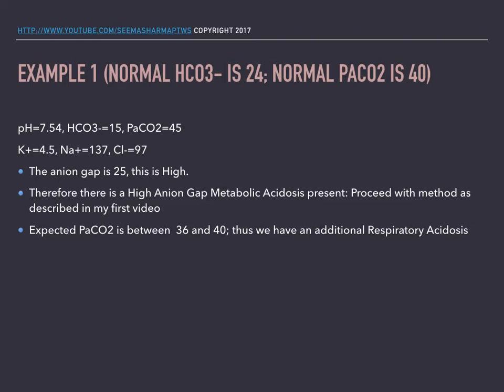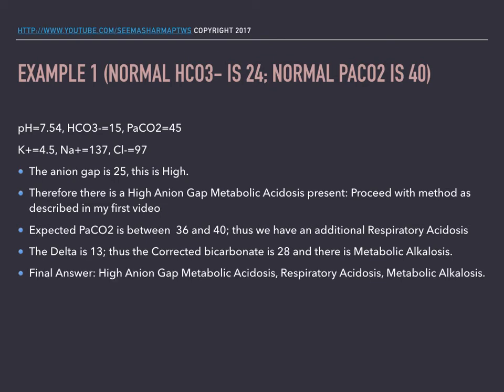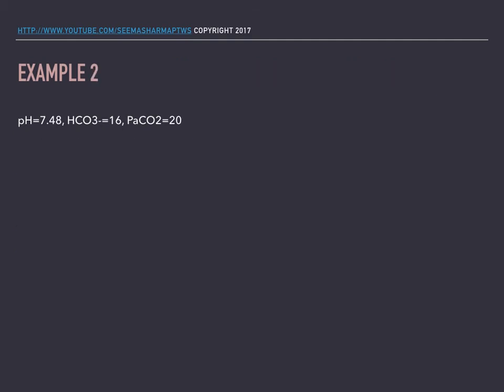Thus we have an additional respiratory acidosis, because the pressure of carbon dioxide we're given is 45. The Delta is 13, so the corrected bicarbonate is 28, and there is a metabolic alkalosis. The final answer is: high anion gap metabolic acidosis, respiratory acidosis, and metabolic alkalosis.